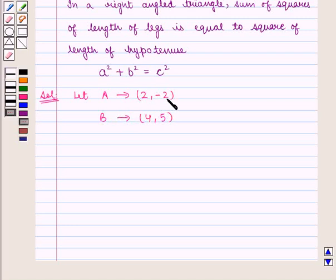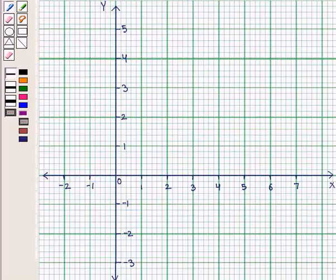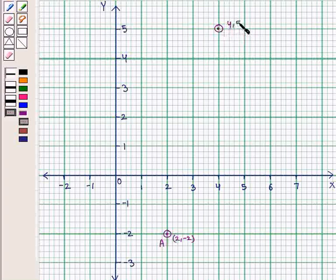Now we shall plot these points on the coordinate plane. We have point A with coordinates (2,-2), so we label this point as A. And point B has coordinates (4,5), so we label this point as B. Now we join the two points to get a straight line AB.